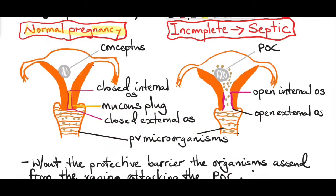In a normal pregnancy, there are three things that prevent a woman from getting a genital infection. The first one is a mucus plug, which acts as a barrier sitting between the internal os and the external os, preventing microorganisms from ascending into the uterus. The second protective barrier is the closed cervix, with a closed internal os and external cervical os. The third is the amniotic sac.